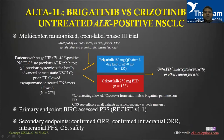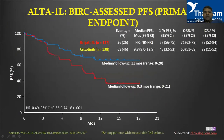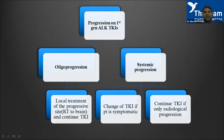Brigatinib was also evaluated versus crizotinib. A 2020 update after approximately 25 months of median follow-up showed a PFS advantage: crizotinib at 11 months versus brigatinib at almost 24 months — still slightly less than alectinib.